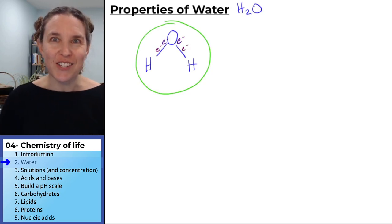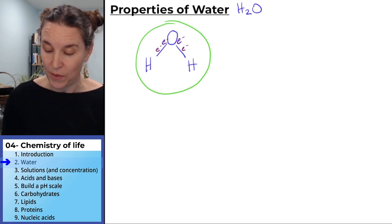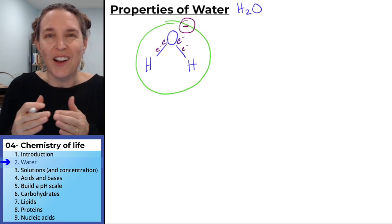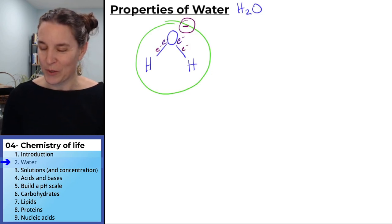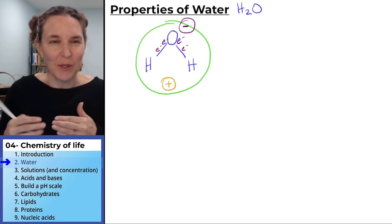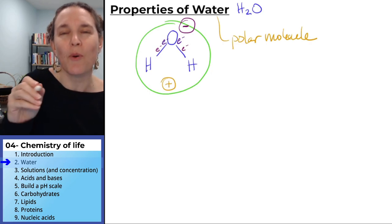But oxygen is a little bit more of a bully when it comes to electron sharing, and it hogs the electrons. This little electron cloud gets a little bit closer to the oxygen end of things, which means you end up with a partially negative charge on the oxygen end of a water molecule. That also means that you end up with a partially positive charge on the hydrogen end of the molecule. So water is a polar molecule.